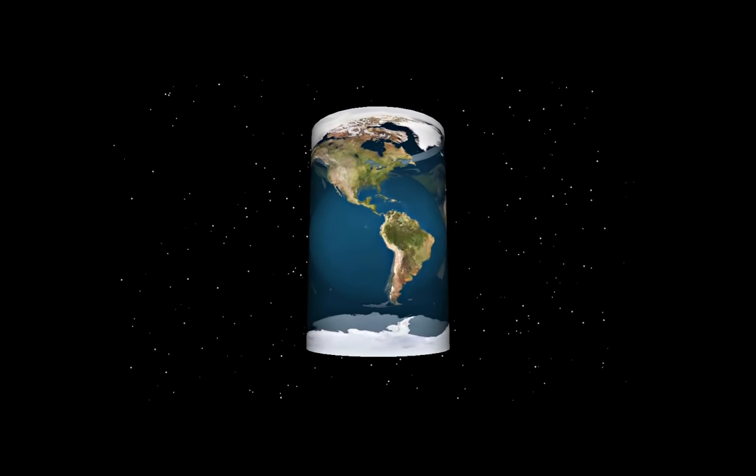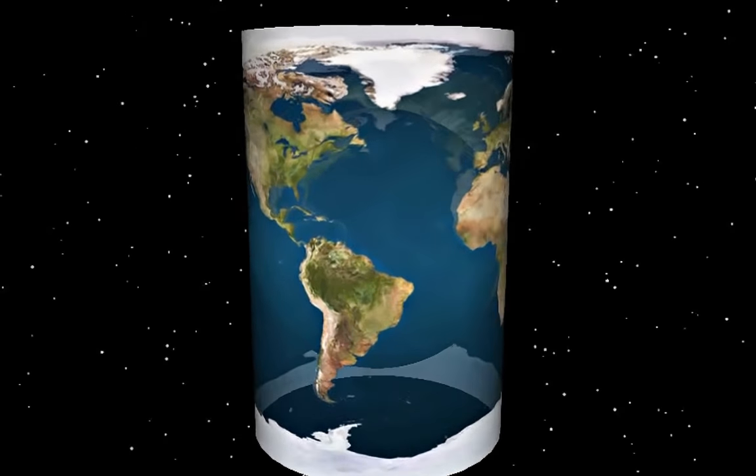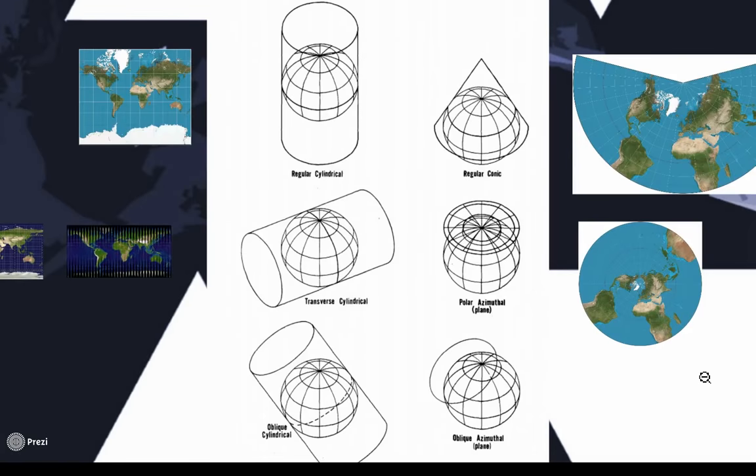A cylinder is not the only surface that we use. We could also use a plane or a cone. Together, these are the three main projection surfaces. We could also play with different alignments of the globe and the projection plane. If we align the cylinder horizontally, we call that a transverse cylindrical projection. If we align it at an angle, we call it an oblique cylindrical projection.